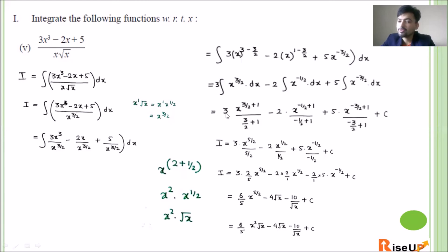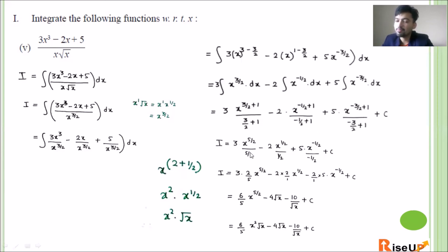Apply the xⁿ formula to each term. 3 times x^(3/2 + 1) upon (3/2 + 1): since 3/2 + 1 = 5/2, this gives 3 · x^(5/2) upon (5/2). Minus 2 times x^(-1/2 + 1) upon (-1/2 + 1): since -1/2 + 1 = 1/2, this gives x^(1/2) upon (1/2). Plus 5 times x^(-3/2 + 1) upon (-3/2 + 1): since -3/2 + 1 = -1/2, this gives x^(-1/2) upon (-1/2). Plus c.